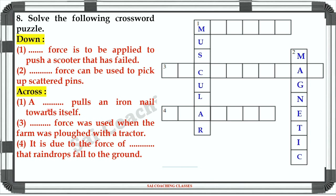Across 1: A dot dot pulls iron or nails towards itself. Answer: Magnet. Across 3: Dot dot force was used when the farm was ploughed with a tractor. Answer: Mechanical. Across 4: It is due to force of dot dot that raindrops fall to the ground. Answer: Gravity.